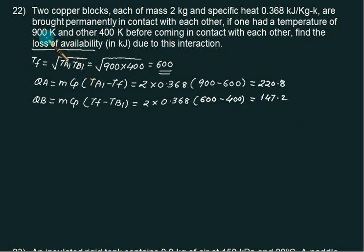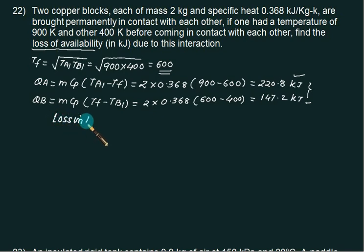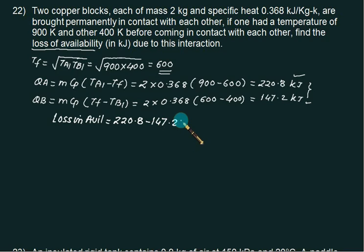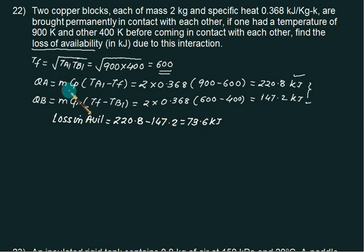The difference of these two energies is the heat lost to the surrounding, which is called the loss of availability. So loss in availability equals Q_A minus Q_B, that is 220.8 minus 147.2 equals 73.6 kJ. This is the loss of availability due to this process when we assume entropy generation equal to 0. This much is the heat lost to the surrounding.